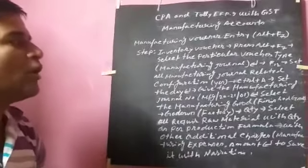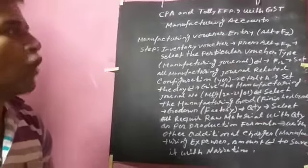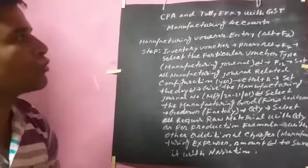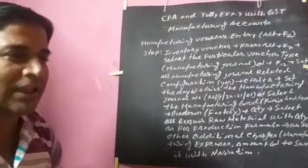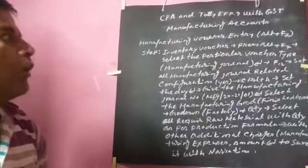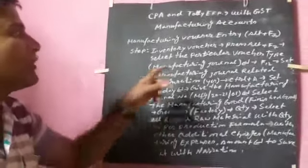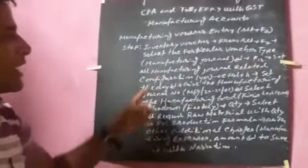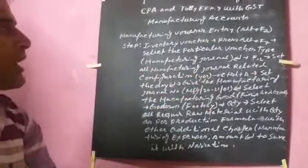When we build this, we should add the stock journal. This uses Alt plus F7. You have to select the particular voucher type.